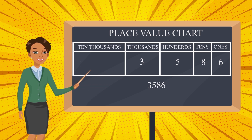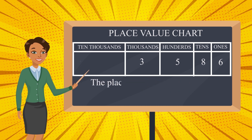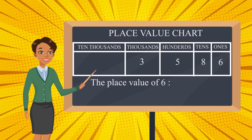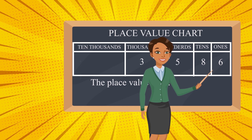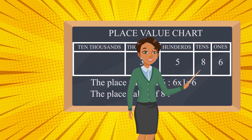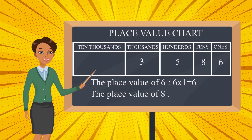Now let's find out the place value of each digit. The place value of six — how many sixes are there in the ones place? Six ones, that is six. If we see the place value of eight — eight is in the tens place. Eight tens is nothing but eighty.